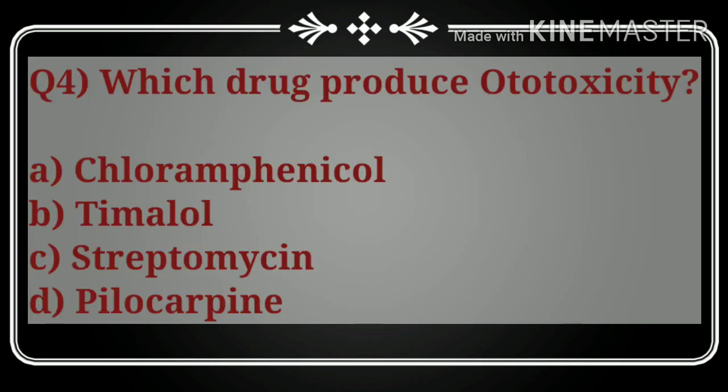Question number four: which drug produces ototoxicity? Ototoxicity is an adverse effect. The options are: A) chloramphenicol, B) timolol, C) streptomycin, D) pilocarpine. The correct answer is option C, streptomycin. Streptomycin is an aminoglycoside that causes ototoxicity — it causes cochlear damage, resulting in hearing loss. That is the side effect of streptomycin and aminoglycosides in general.